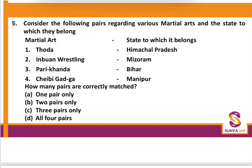Consider the following pairs regarding various martial arts and the states to which they belong: Thoda — Himachal Pradesh, correct; Imbu and Wrestling — Mizoram, correct; Parikhand — Bihar, correct; Chebi Gad — Manipur, correct. All four pairs are correctly matched.